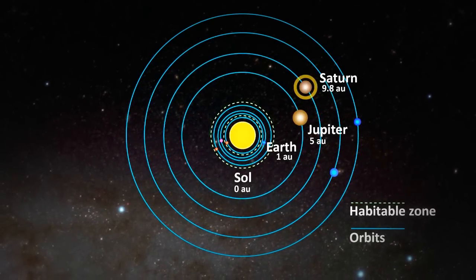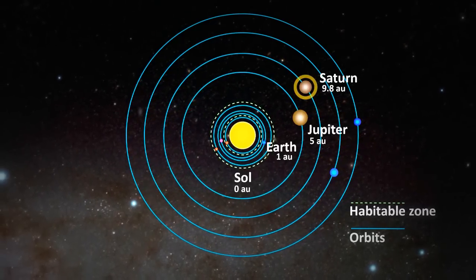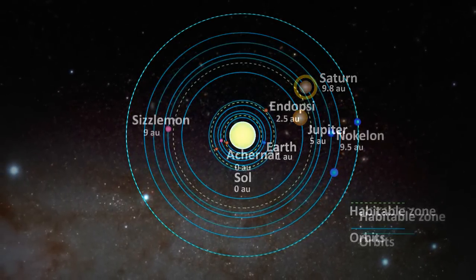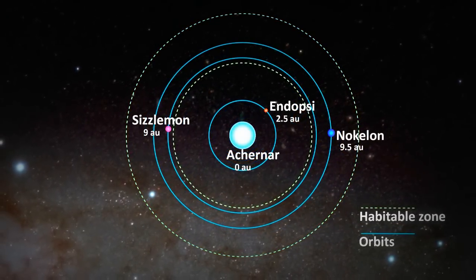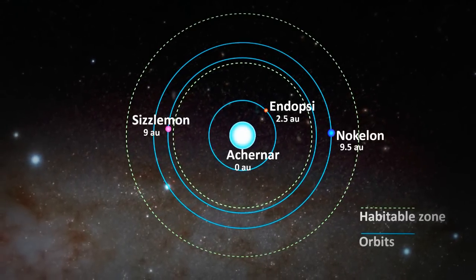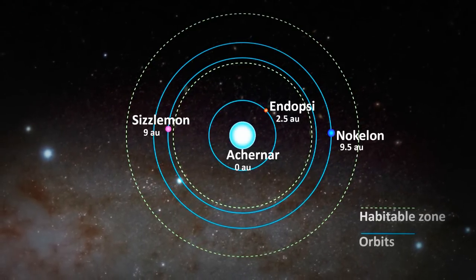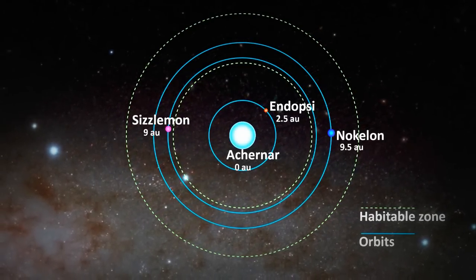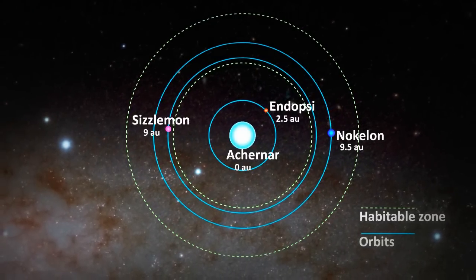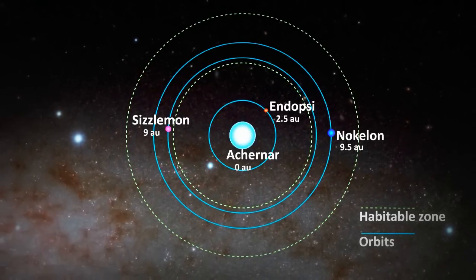The distances from the sun for the 3 major planets of our solar system are Earth, 1 AU; Saturn, 10 AU; and Jupiter, 5 AU. Now I'm going to talk about the 3 major planets of the Arcana system. They are Sizzlemon, Endopsy, and Nolcolon. Their distances from Arcana are Sizzlemon, 9 AU; Endopsy, 2.5 AU; and Nolcolon, 9.5 AU.